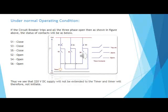First we will discuss what will happen under normal operating conditions of the circuit breaker — that is, if the circuit breaker trips and all three phases open simultaneously. If circuit breaker trips and all three phases open as shown in the figure, the status of the contacts will be: S1 closed, S3 closed, S5 closed, S2 open, S4 open, S6 open. Thus, if we apply a 220V or 110V DC supply, it will not reach the timer and the timer will not be initiated. Therefore, the trip command from pole discrepancy will not go.